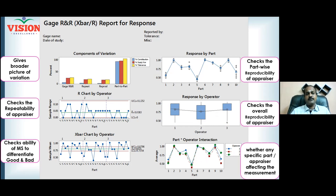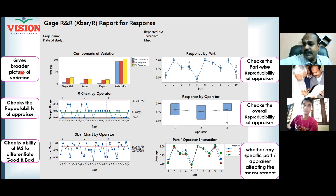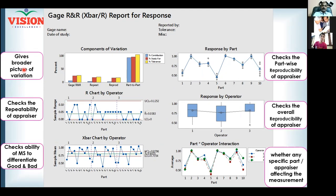The first graph gives a broader picture of variation. Variation can come from the process or from the measurement — which is higher? If measurement variation is higher than process variation, you cannot effectively control the process variation. Just like you can't effectively advise a friend when you have more problems than they do — when your measurement system has a lot of variation, using it to reduce process variation is not a great idea.